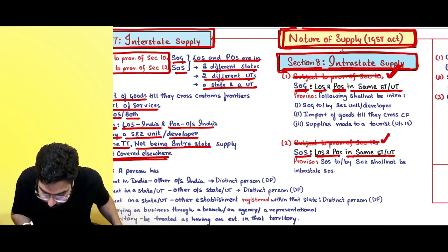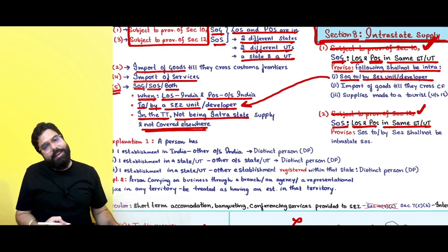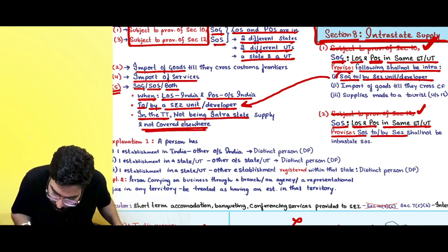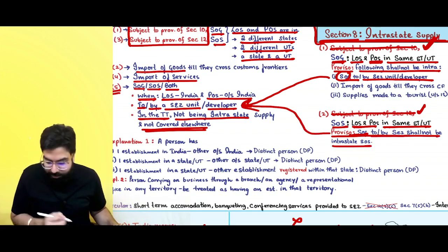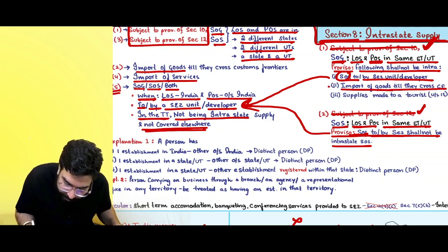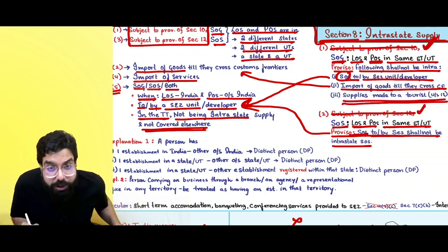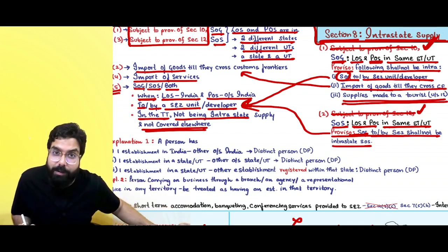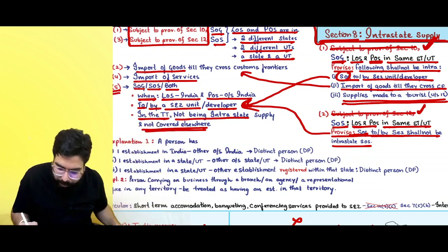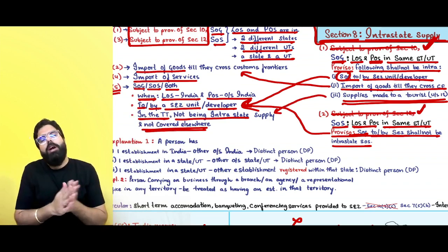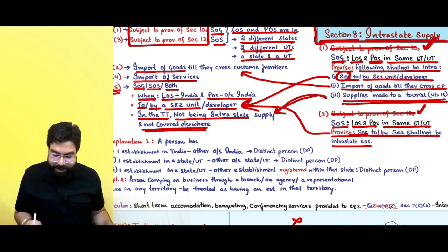Supply to or by an SEZ unit or developer is always interstate supply — it will never be intrastate. The proviso confirms: supply of goods to or by SEZ unit or developer shall not be intra; supply of services to or by SEZ unit shall also not be intra — it is always interstate. Import of goods till they cross the customs frontier is always interstate. Supplies made to a tourist are always interstate supply because the tourist takes goods outside India.